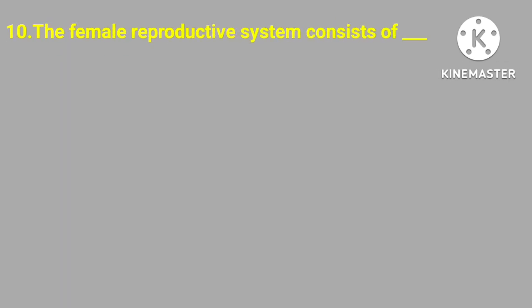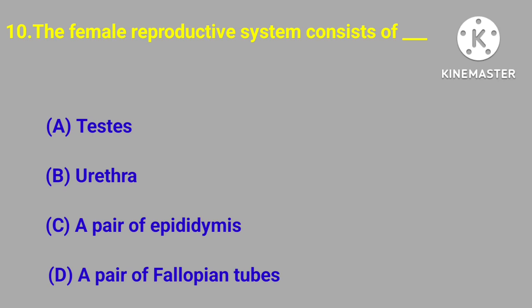Question number ten. The female reproductive system consists of: testes, urethra, a pair of epididymis, a pair of fallopian tubes. Correct answer is a pair of fallopian tubes.